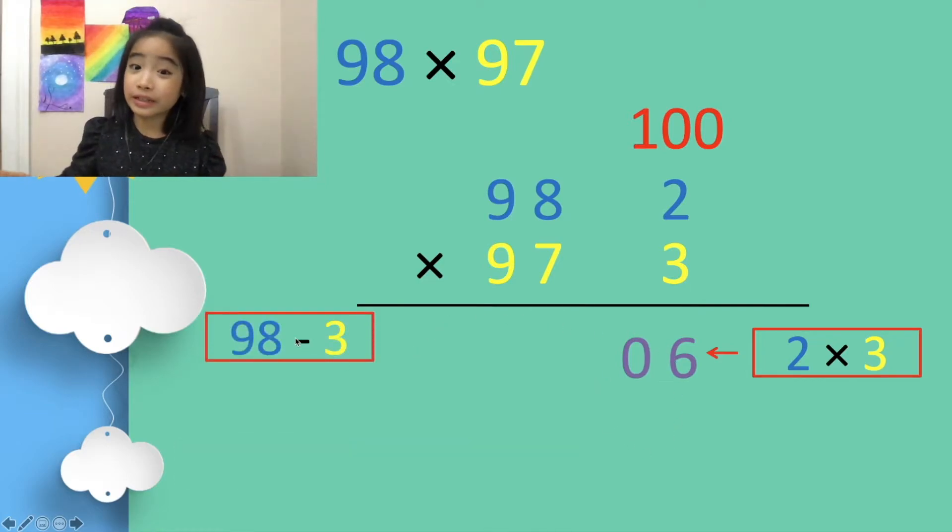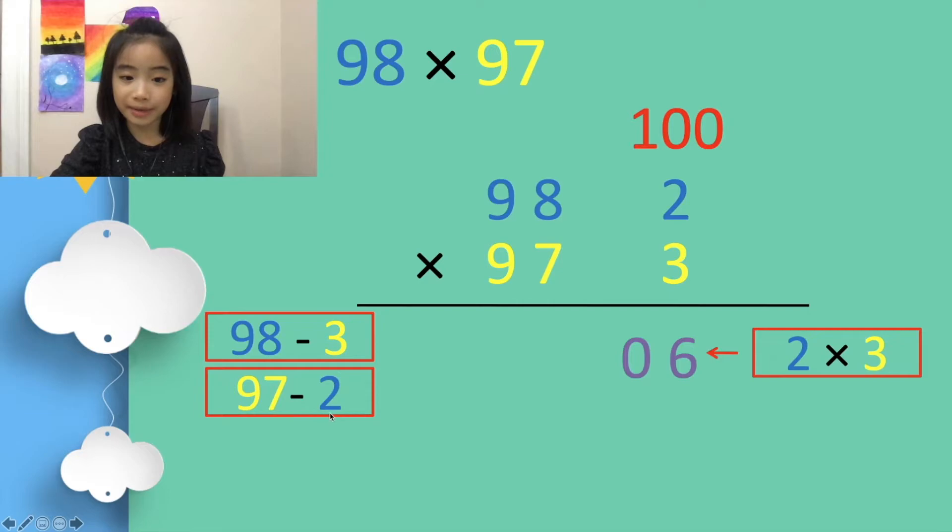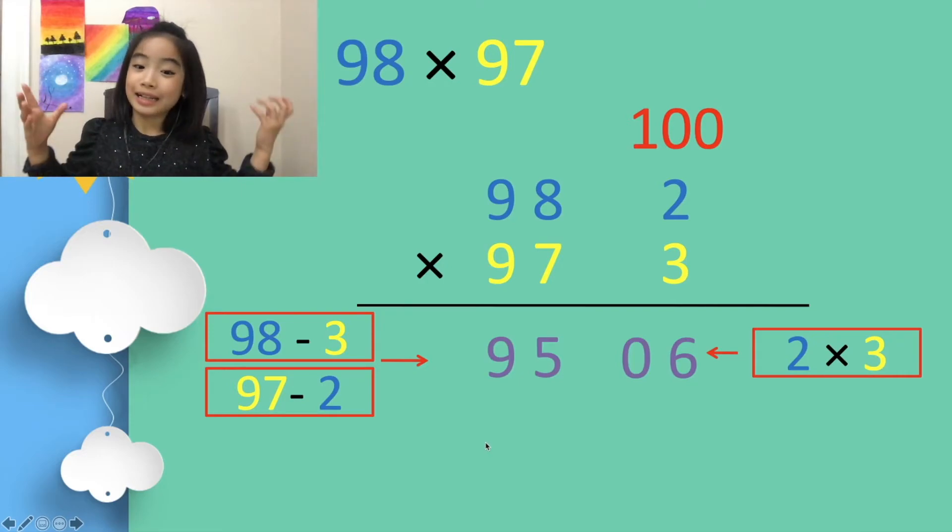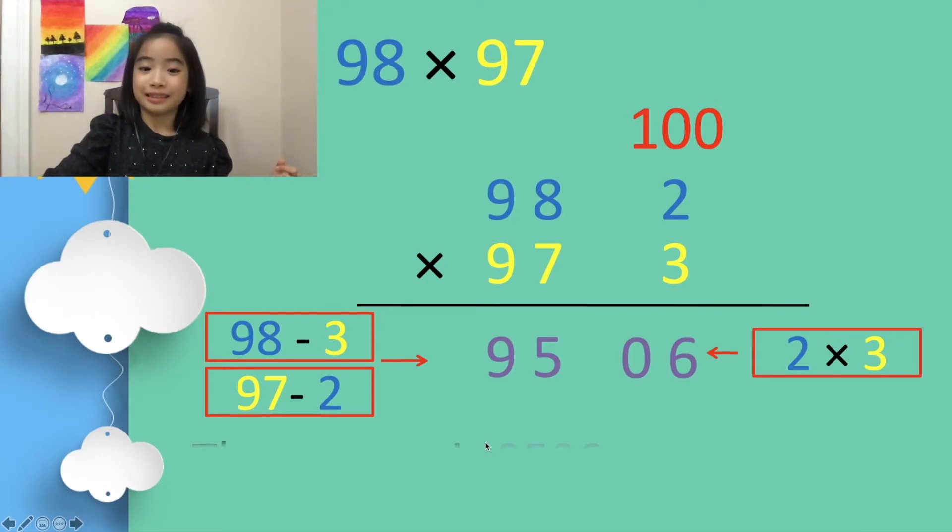Now, if we switch the order, like this, 98 minus 3 and 97 minus 2, they both equal 95. And that's it. The answer is 9,506.